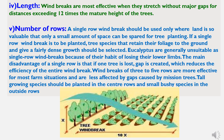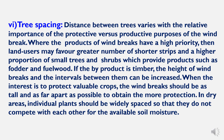Eucalyptus are generally unsuitable as single-row windbreaks because of their habit of losing lower limbs. The main disadvantage of a single row is that if one tree is lost, a gap is created which reduces the efficiency of the entire windbreak. Windbreaks of three to five rows are most effective for most farm situations and are less affected by gaps caused by missing trees. Tall-growing species should be planted in the center rows and small bushy species in the outside rows.